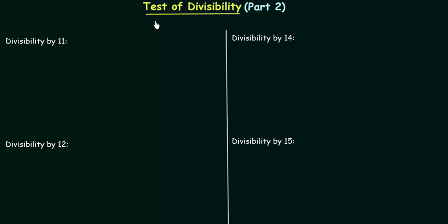Welcome to the second part of divisibility tests. We will start with divisibility by 11. A number is said to be divisible by 11 if the difference of the sum of digits at odd places and the sum of digits at even places is either equal to 0 or divisible by 11.